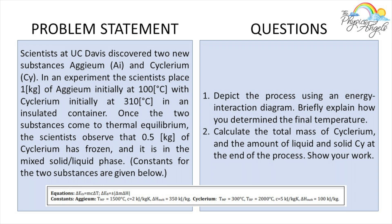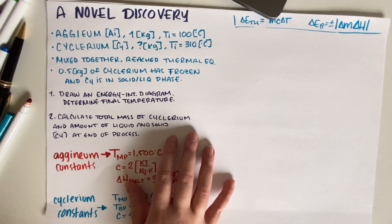The first thing we have to do is depict the process using an energy interaction diagram and explain how we determine the final temperature. Then for part B, we have to calculate the total mass of cyclerium and the amount of liquid and solid at the end of the process, and show our work.